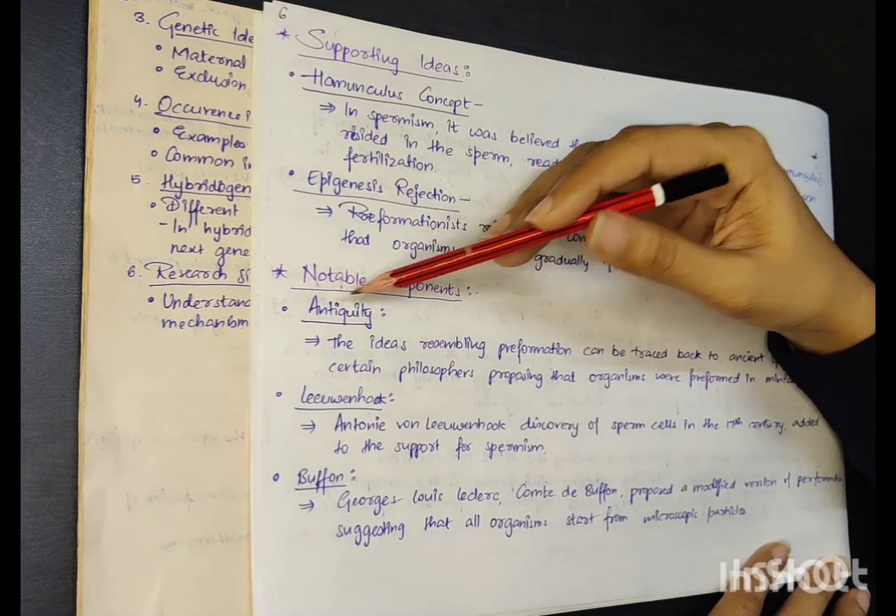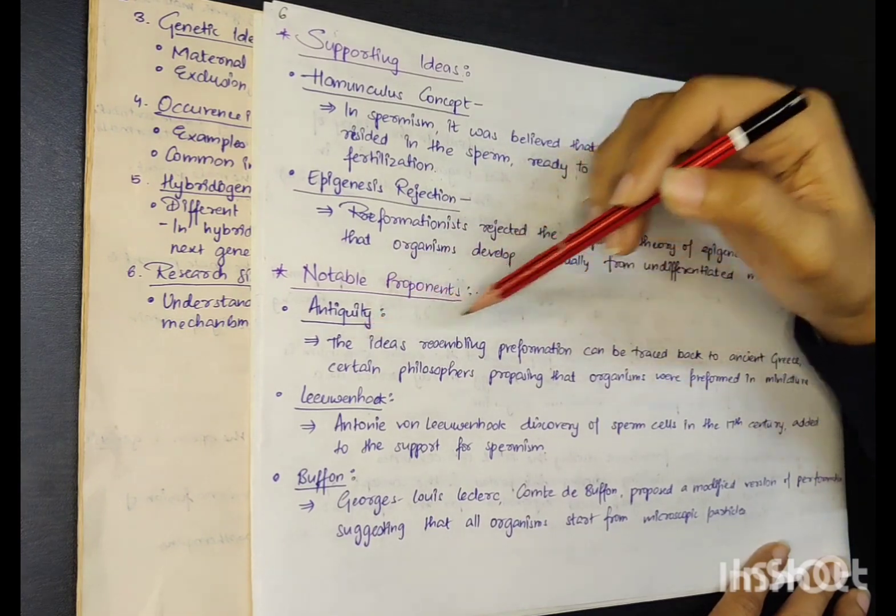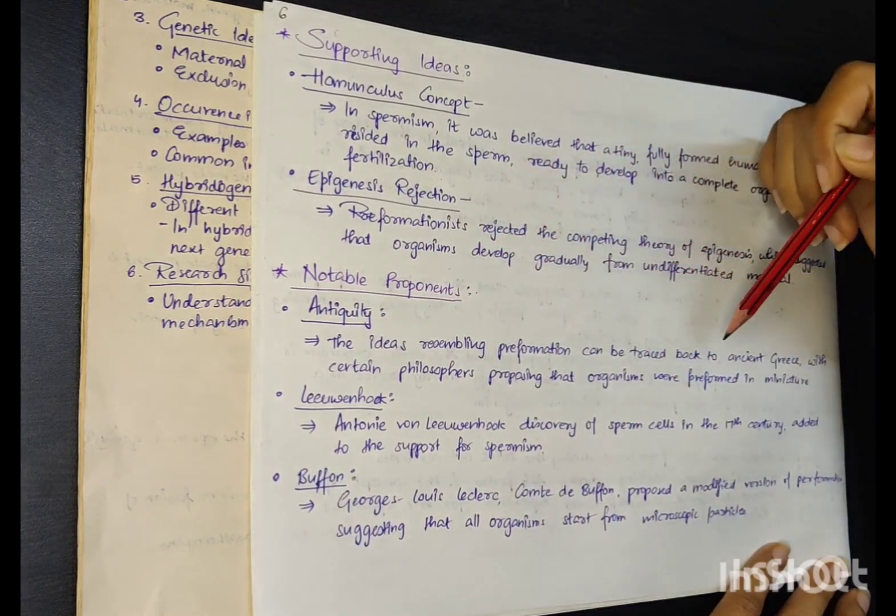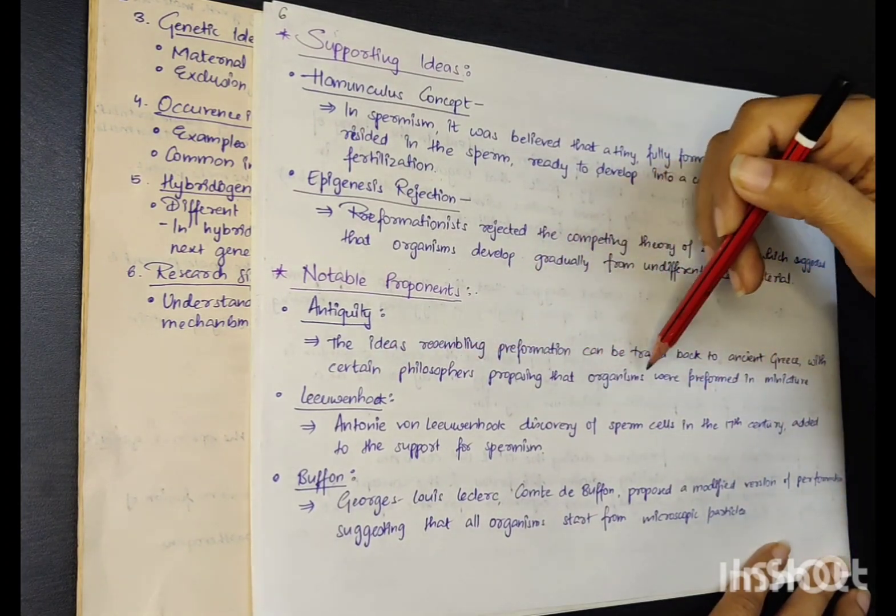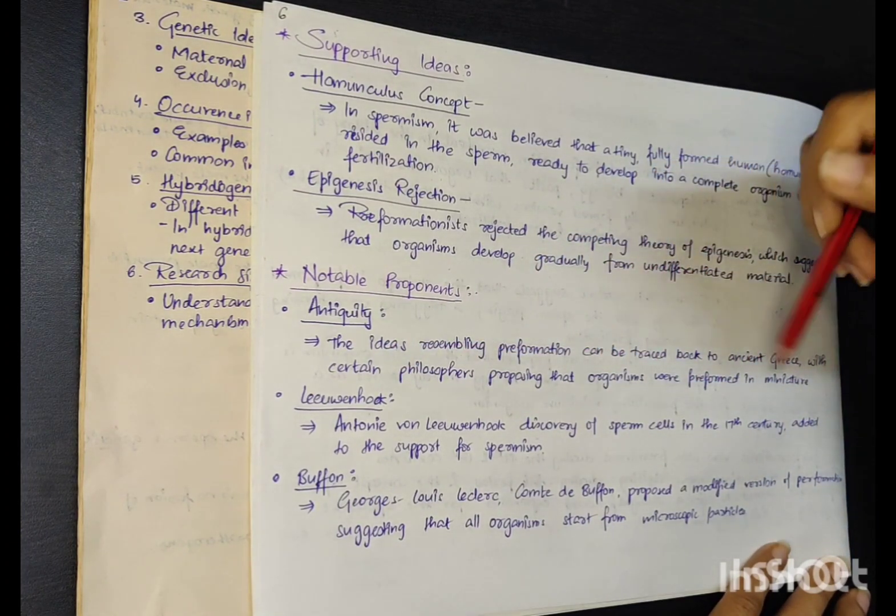Notable proponents: Antiquity. The idea resembling pre-formation can be traced back to ancient Greece, with certain philosophers proposing that organisms were pre-formed in miniature versions.